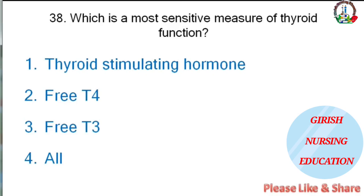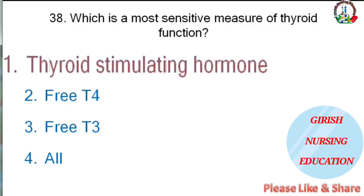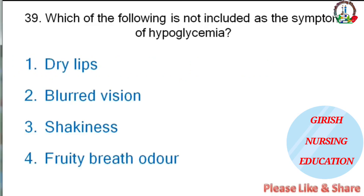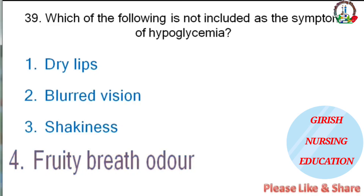Most sensitive measure of thyroid function — thyroid stimulating hormone, free T4, free T3, or all? The correct answer is thyroid stimulating hormone. Which is not a symptom of hypoglycemia — dry lips, blurred vision, shakiness, or fruity breath odor? The correct answer is fruity breath odor.